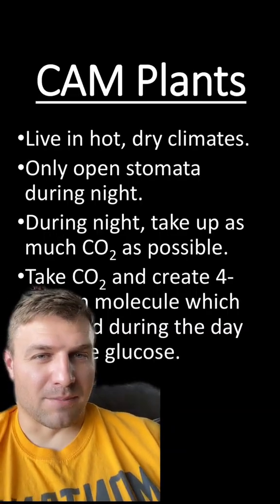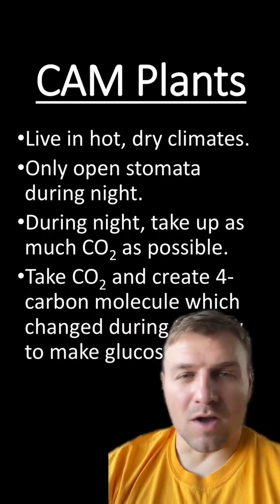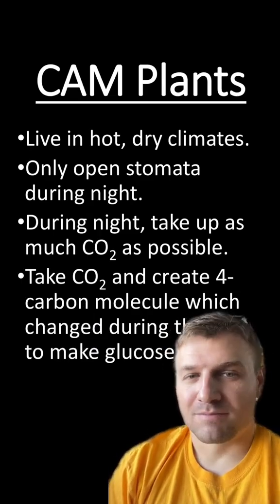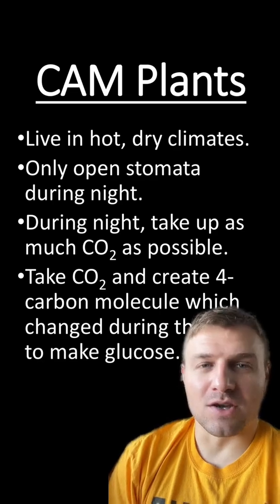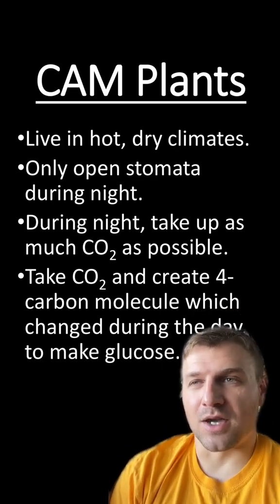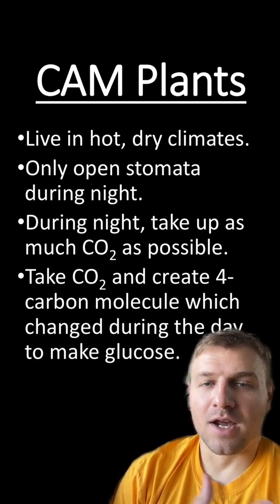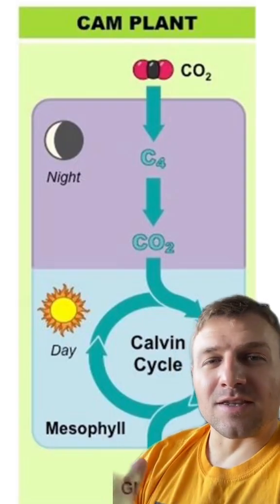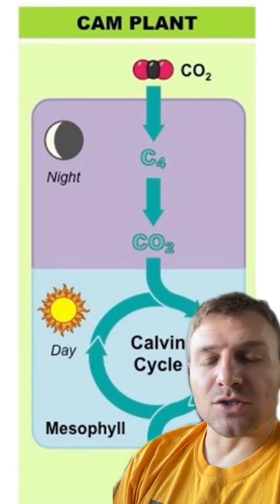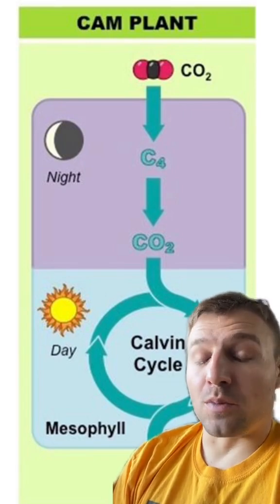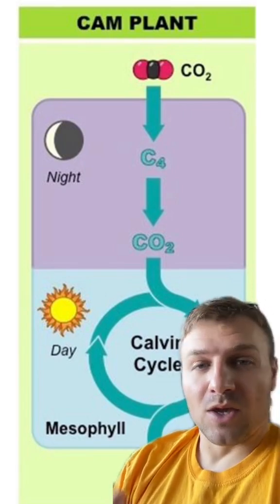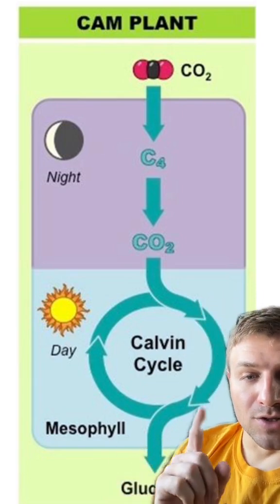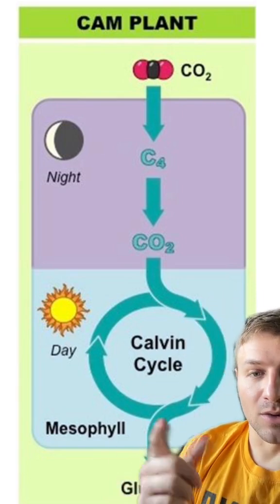And lastly, we have CAM plants. These plants will live in hot and dry environments, and they will only open their stomata at night. During the night, they'll take in as much CO2 as they can. They'll take the CO2 and produce a four-carbon molecule that will eventually be made into glucose during the day. You can see that the plant will only allow CO2 in during the night, which means it will only open its stomata at night. It will take that CO2 and produce a C4 molecule, and that C4 will then produce molecules that will go into the Calvin cycle and produce glucose.